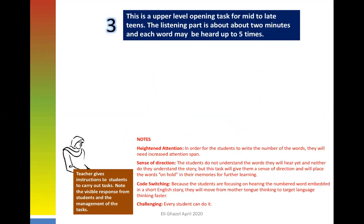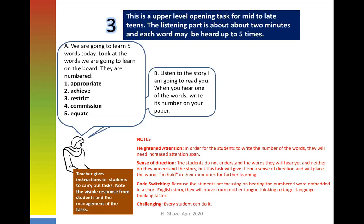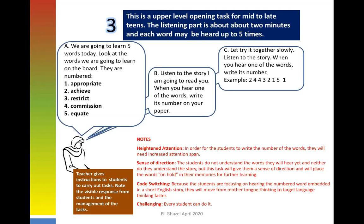For the higher-level version: we're going to learn five words today. Look at the words on the board — they are numbered one through five. When I say a word, say its number. Here is what to do: listen to the story, and when you hear one of the words, write its number on your paper. The paper will only have numbers, corresponding to the numbered words on the board. Let's try it together — listen to the story and write the number when you hear a vocabulary word.